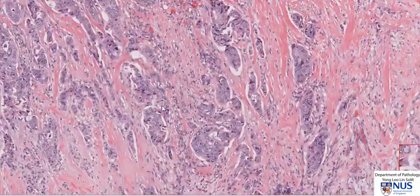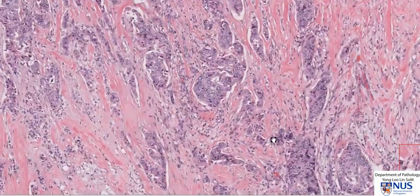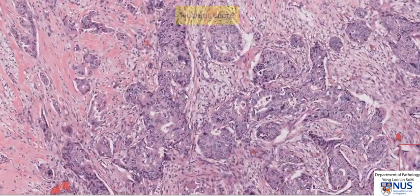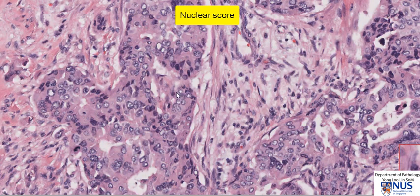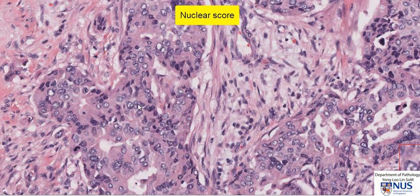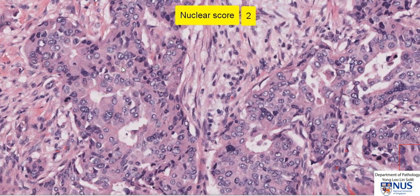Now let's look at a well-preserved area for the nuclear score. If you look at the nuclei, they are moderately pleomorphic — not wildly pleomorphic, yet at the same time not very well differentiated. Hence, the nuclear score will also be 2.